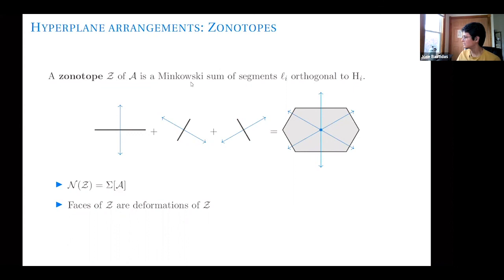I'm not sure what an efficient characterization would be, but I think a necessary condition is: if you look at all the edges, every edge that is parallel to another must have the same length. And I think that might actually be sufficient.